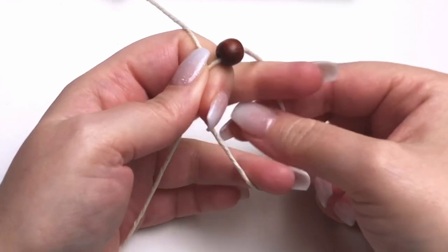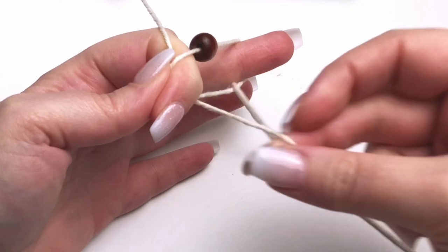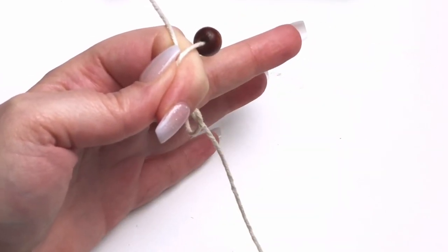And just like we were doing before, we're gonna wrap our longer tail end around the side of our loop. But this time, because I want the barrel knot to kind of wrap around our bead, we're gonna wrap it around 20 times.